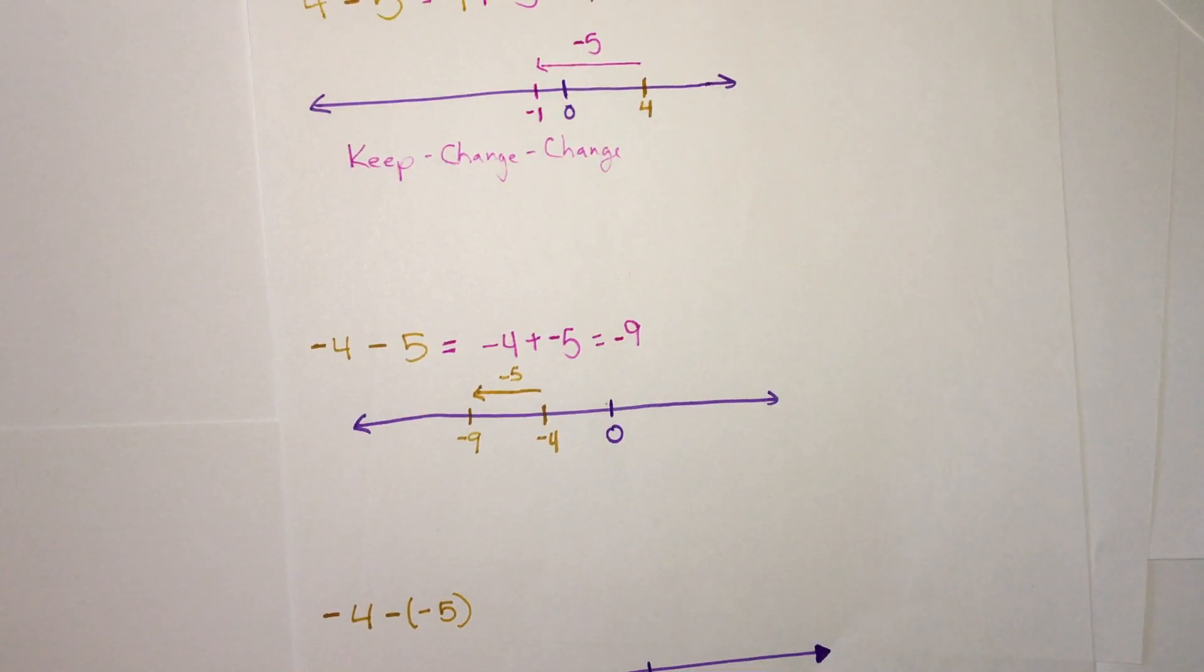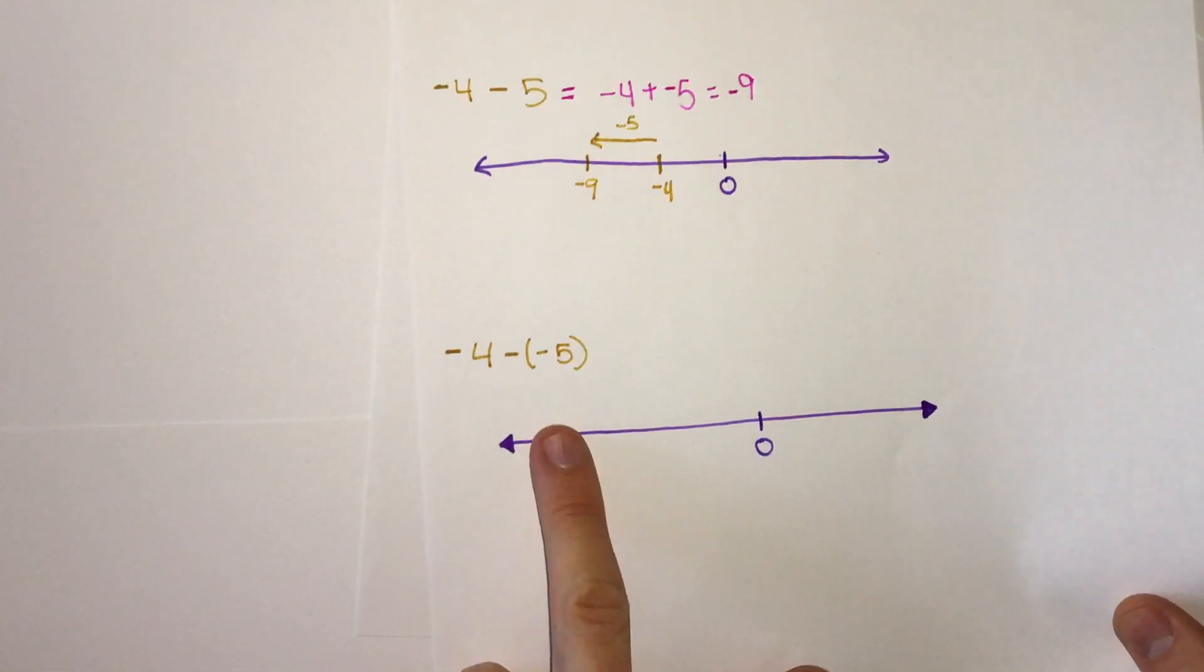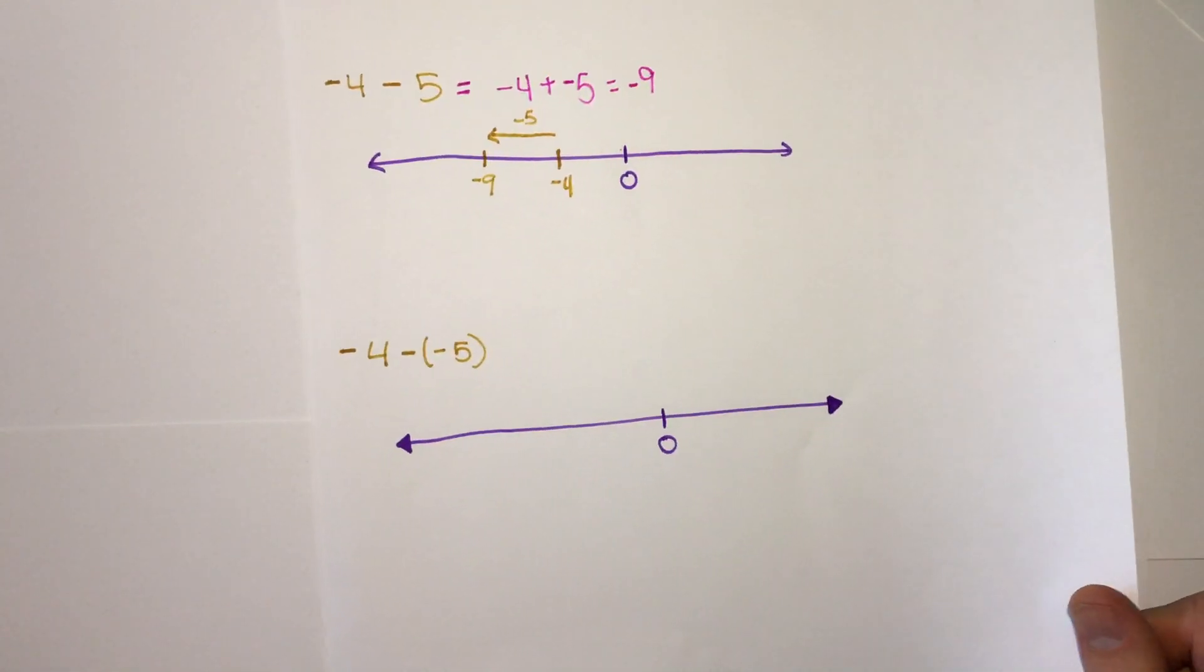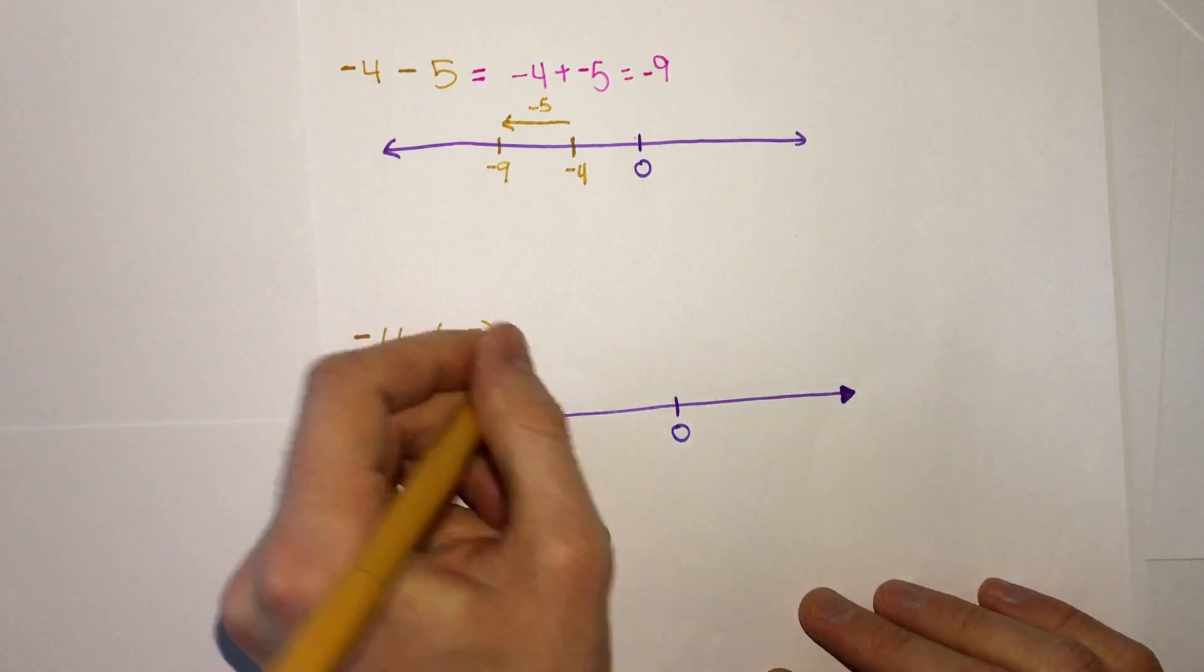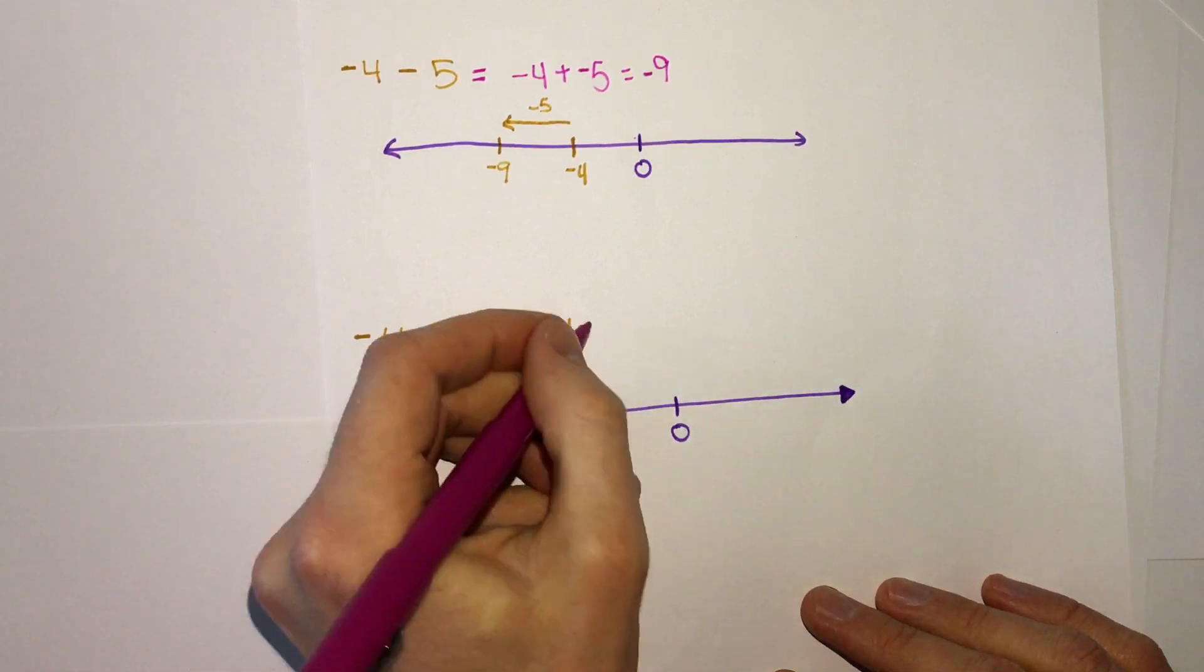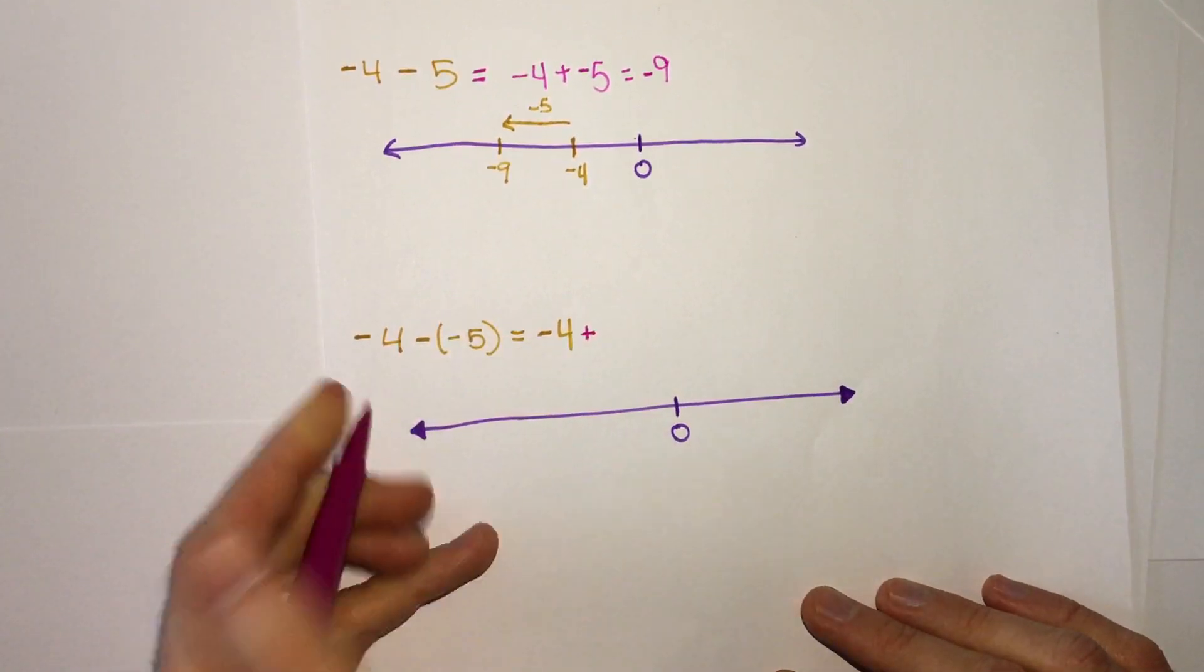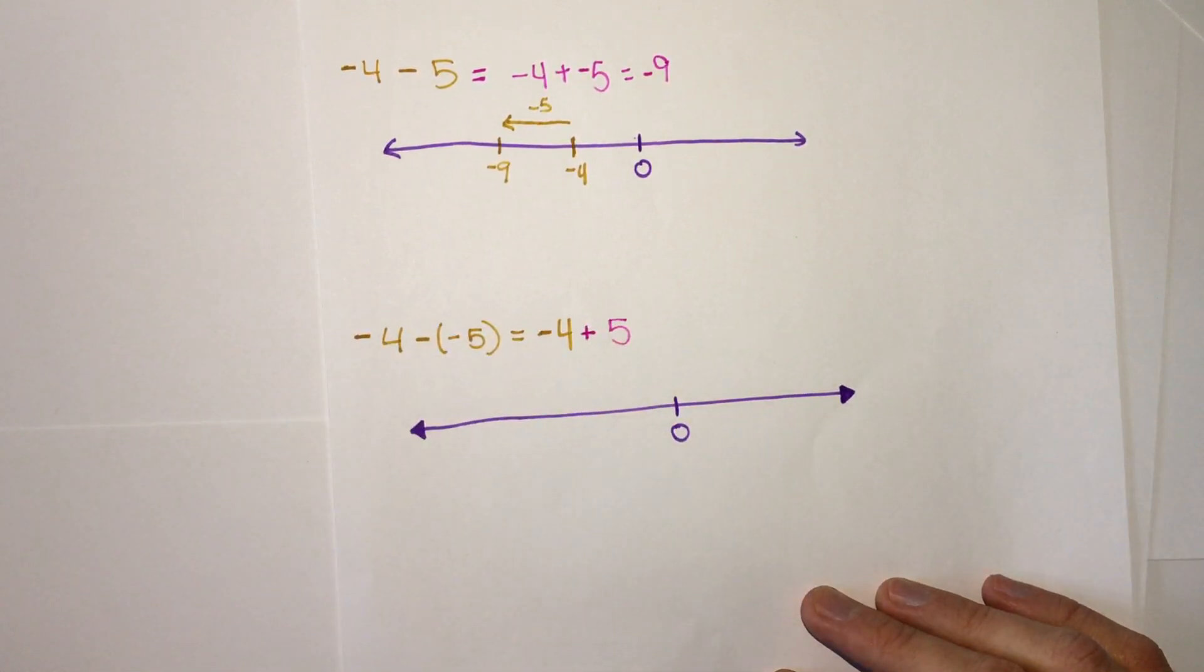We've looked at keep, change, change when we're subtracting a positive number, but how about for a negative? Negative 4 minus negative 5. Well, we can do the same thing. Negative 4 is our keep, then we'll change subtraction, and change negative 5 to positive 5.